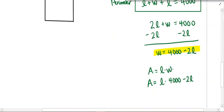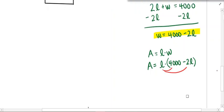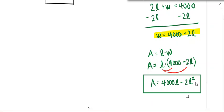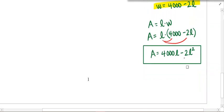So now: area equals length times width, and the width is the same thing as 4,000 minus 2L. I need to put parentheses around it because this whole entire quantity is the W, and in the next step the L is going to be distributed there because length is multiplied by the entire width. Once you do that, if you distribute, the area equals 4,000 times L minus 2L squared.